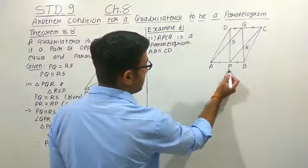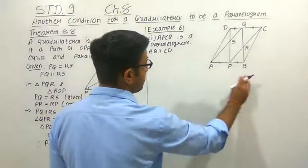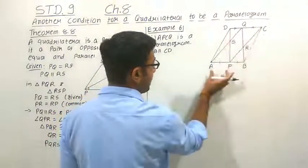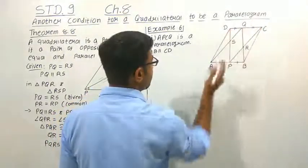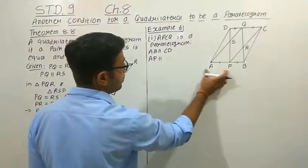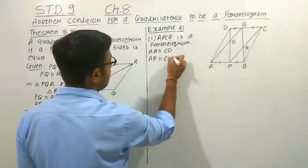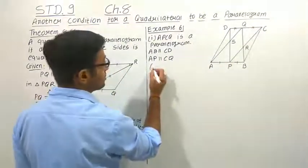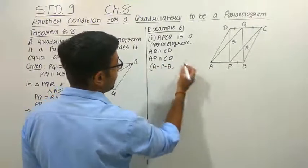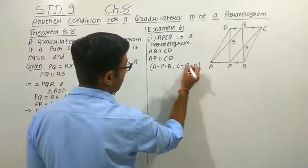P is a point on the side AB. So if AB is parallel to CD, then AP is also parallel to CD. We can write down that AP is parallel to CQ, because A, P and B are collinear, and in the same way C, Q and D are collinear.